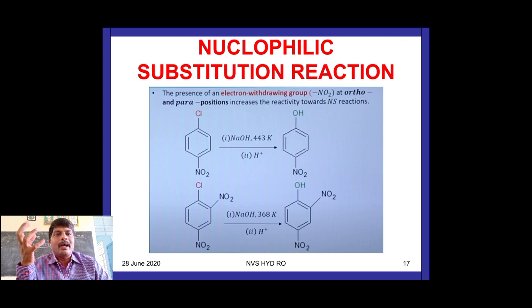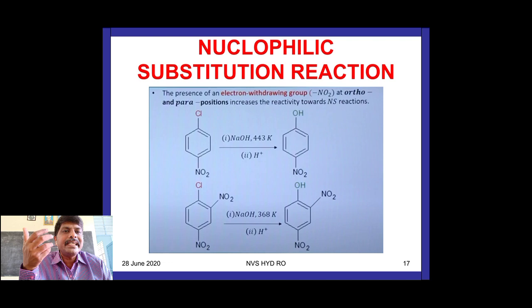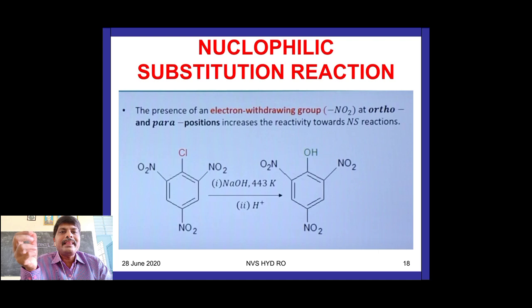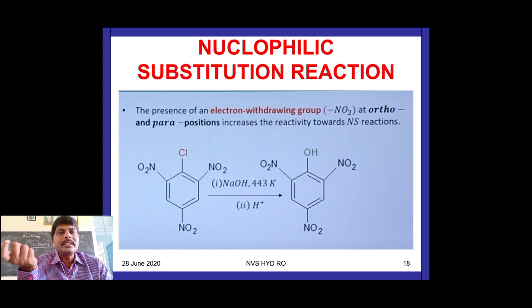If you place electron-withdrawing groups like –NO2 at the ortho and para positions, the reactivity increases. With one NO2 at the para position, 443 K is sufficient. With two NO2 groups (one ortho, one para), the temperature is reduced to 368 K. With three NO2 groups at ortho and para positions, much lower temperature is needed and no high pressure is required.